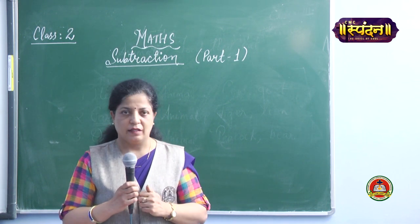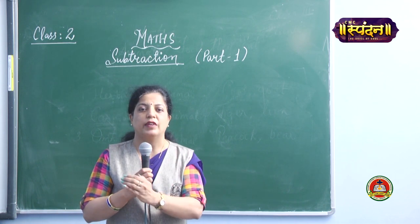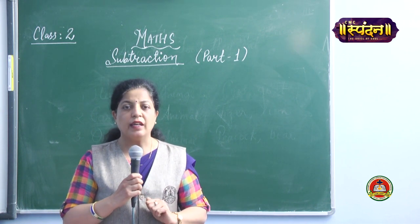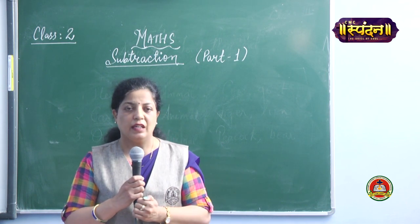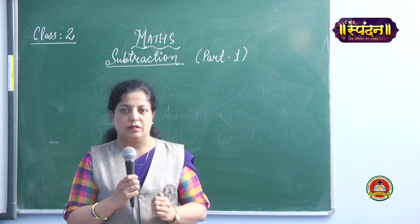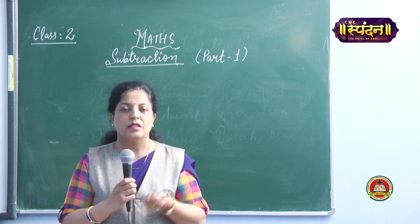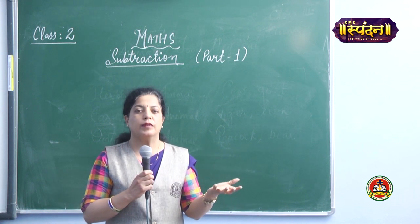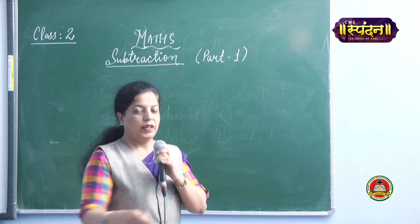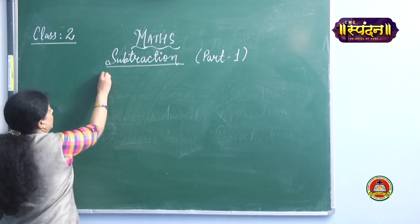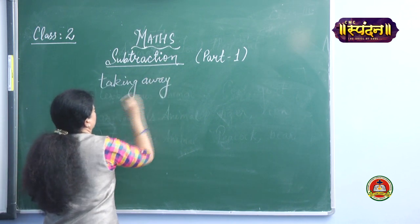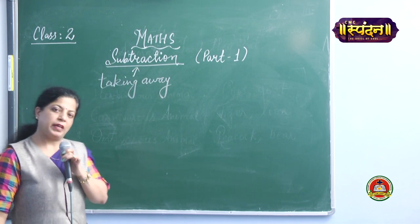Now tell me what I have done. I have taken away one toffee out of five toffees. So you can say taking away is subtraction. In very simple terms, whenever we take away some number, some of the things from the other, then we are doing subtraction. Taking away is known as subtraction.